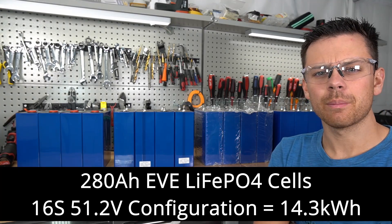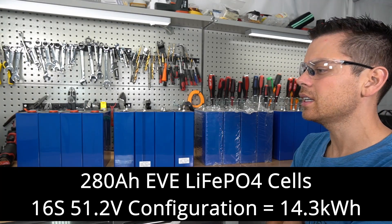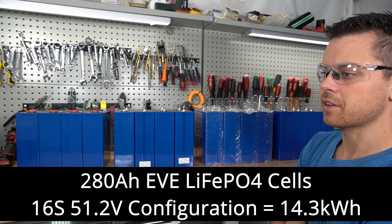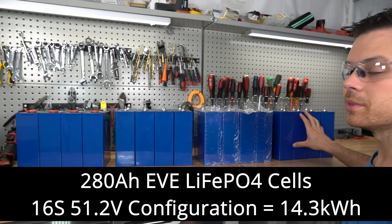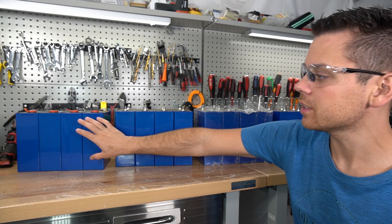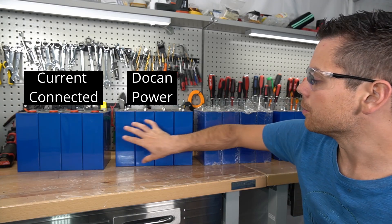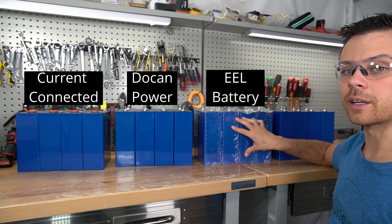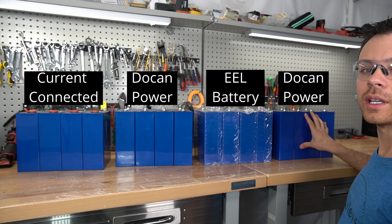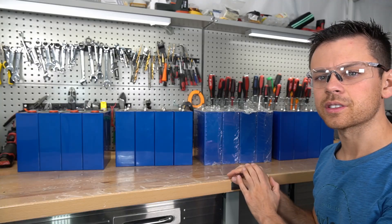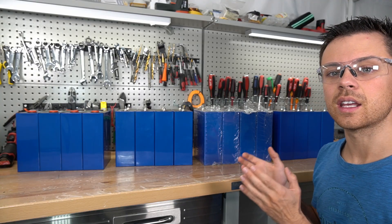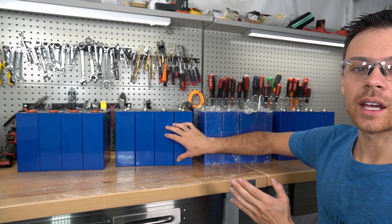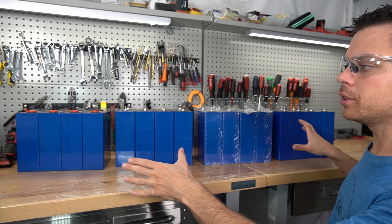These are 280 amp hour cells and I'm going to build a 16S or 51.2 volt nominal lithium iron phosphate battery bank. These cells came from different suppliers: on the far left are from Current Connected, these are from Dokkan Power, these ones are from Eve Battery, and at the very end this group is from Dokkan Power as well. Because they're from different suppliers, they're going to be at a different state of charge. Some of these packs I did capacity tests, others I didn't use at all.